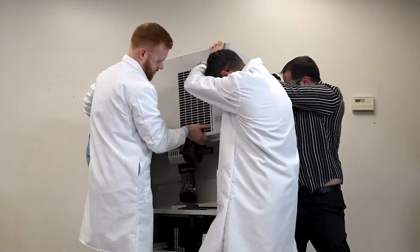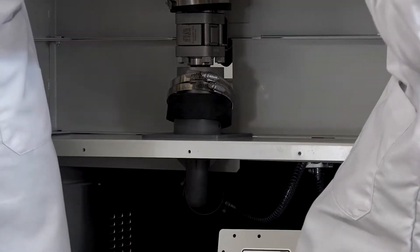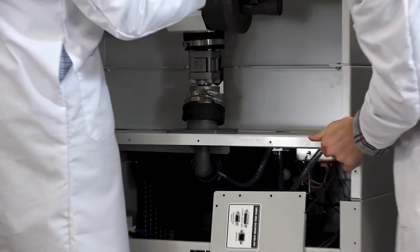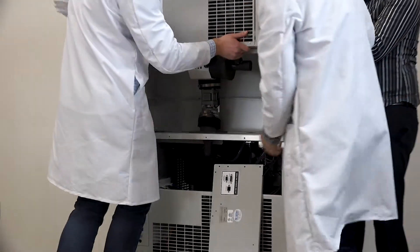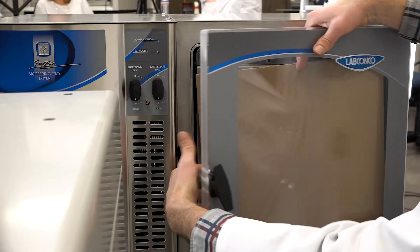Lift the stopper and tray dryer into place on your freeze dryer while centering the vacuum coupling over the vacuum connection port. Do not lift the stopper and tray dryer by the acrylic door.